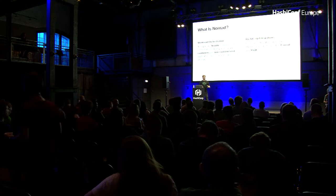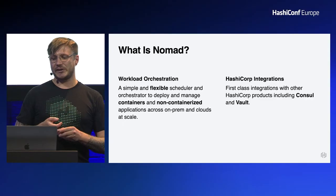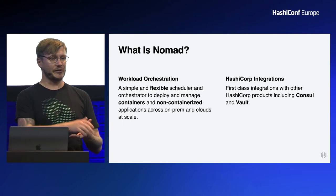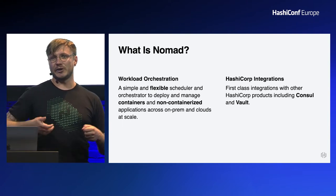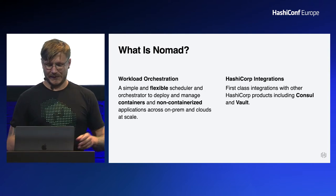We also have first-class Nomad integrations. Typically you might run Consul alongside Nomad — so if you're using service discovery, service mesh, or Consul KV, we integrate natively with that. And then further down the line you might want to run Vault, which can provide database secrets, passwords, and TLS and PKI information to your tasks.